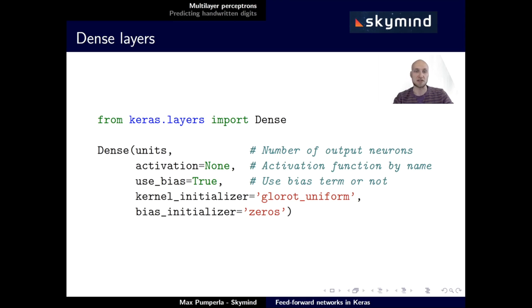Let's start with dense layers. To initialize a dense layer, we have to do a few things. First off, you always have to specify the number of output neurons, or units, that the layer is going to have.